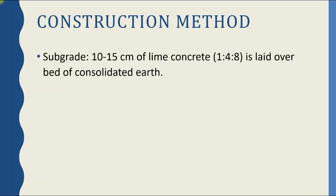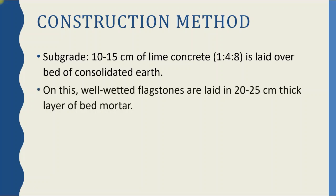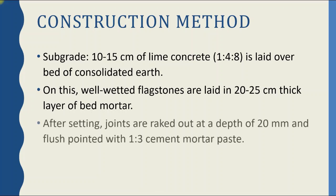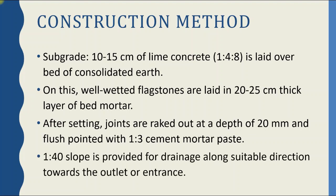The method of construction of flagstone flooring: first, a subgrade of 10–15 cm thick lime concrete in 1:4:8 ratio is laid over a bed of consolidated earth. On this, well-wetted flagstones are laid in a 20–25 cm thick layer of bed mortar. After setting, joints are raked out to a depth of 20 mm and flush pointed with 1:3 cement mortar paste, with joint spacing 1 vertical to 40 horizontal. Slope is provided for drainage along a suitable direction towards the outlet or entrance.